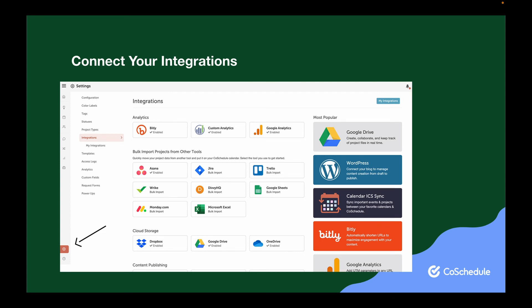The three most popular integrations include WordPress, email marketing platforms like MailChimp, and social media channels. It's recommended that you set up all three if applicable.